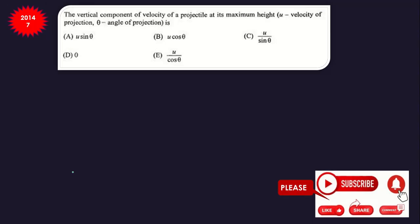Question 7: the vertical component of velocity of a projectile at its maximum height. At maximum height the vertical component is zero; there is only the horizontal component. Therefore D is the answer.